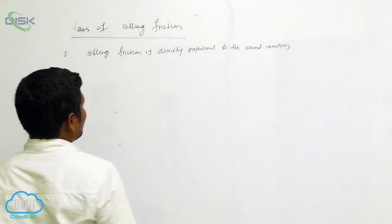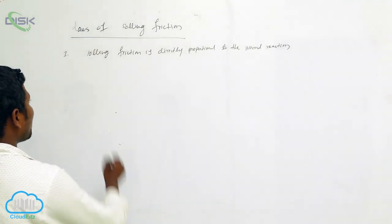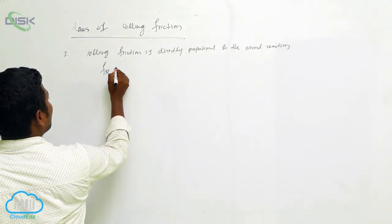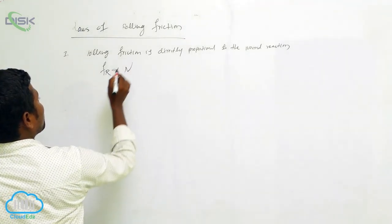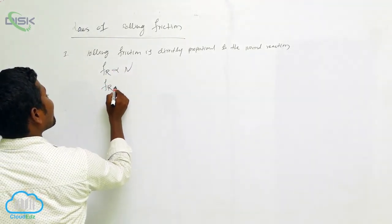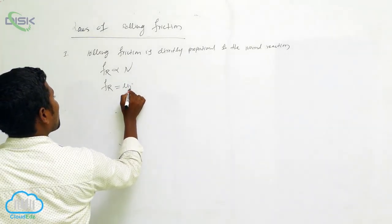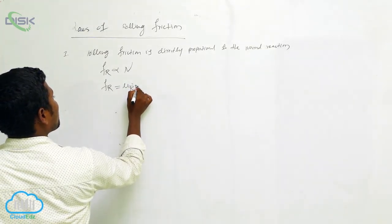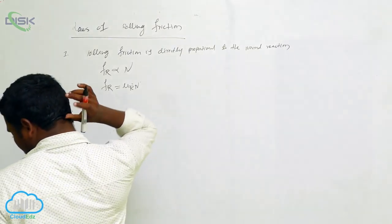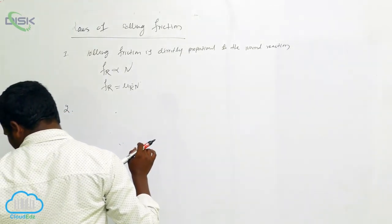Rolling friction, which we denote with suffix r, is directly proportional to N. If we remove the proportionality constant, we get Fr = μN. This is the first law.